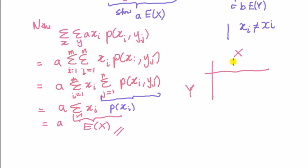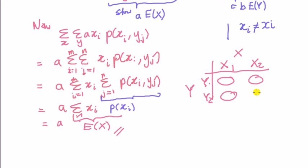Here you have X and Y. I can draw a table because X and Y are discrete. So there's some value for X — X1, X2 — and Y1, Y2. All these numbers in the table tell you about the joint probability mass function. It's telling you the probability of X1 and Y1 is that probability, and X2 and Y1 is that probability.